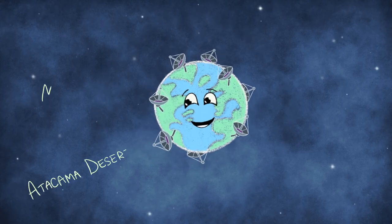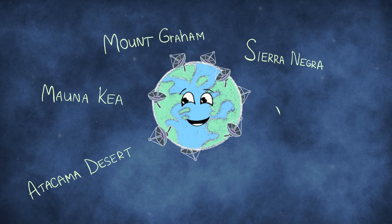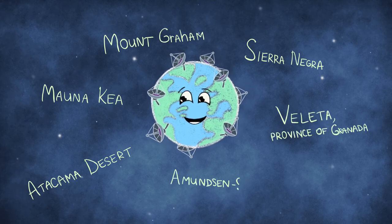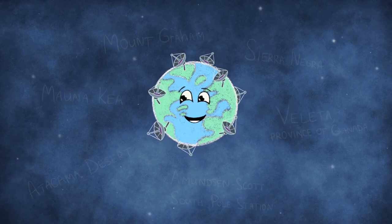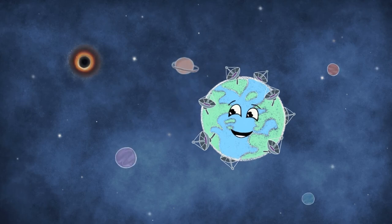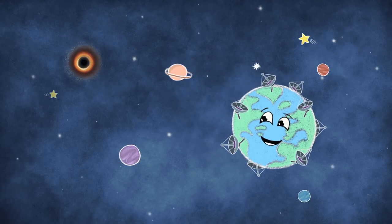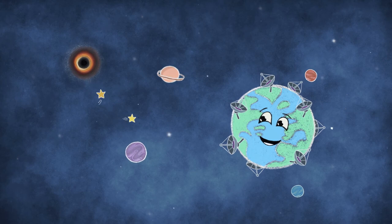The scientists set up two in Chile, two in Hawaii, one in Arizona, one in Mexico, one in Spain, and one in the South Pole. And as the Earth naturally rotates, those very smart telescopes begin to capture everything in space in their search for a black hole.